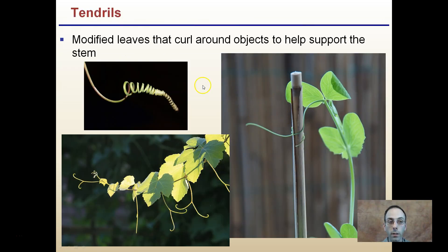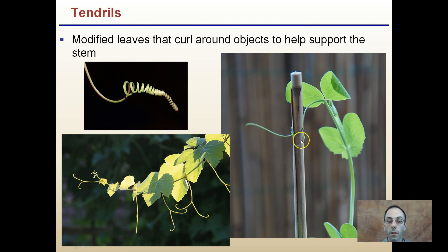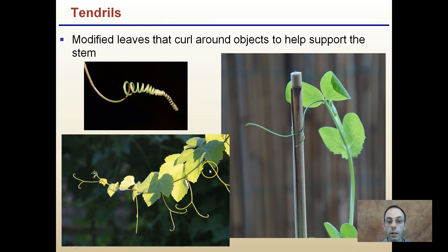Other specialized leaves include tendrils. If you look closely at pea plants, they have little tendrils that grab onto cages or supports. Grapes and squash plants are other examples — this helps support the stems as they grow. These, while they look like little curlicues, are technically modified leaves.